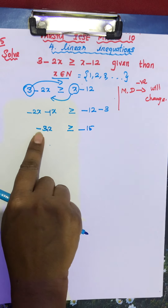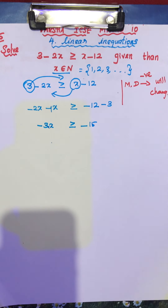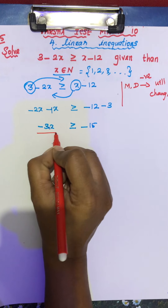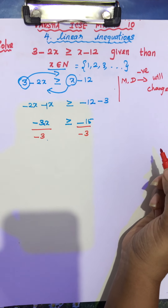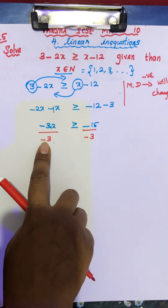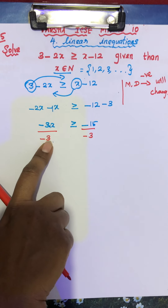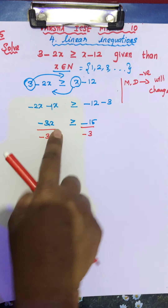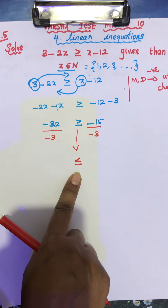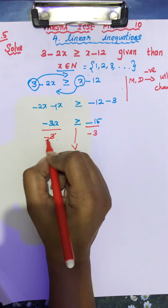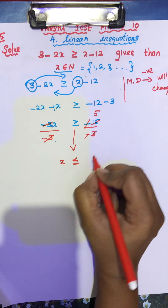The relationship between minus 3 and x is multiplication. To remove this minus 3, you have to divide by minus 3 on both sides. So now we are dividing this inequality by a negative number, so this inequality will change. Cancel the minus 3; x is less than or equal to 5.